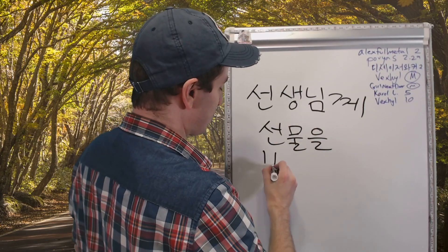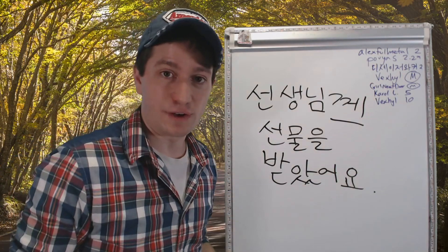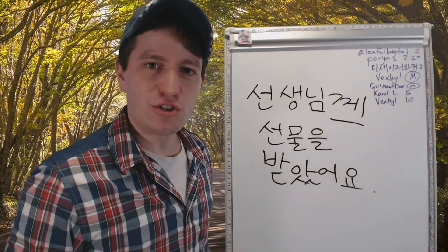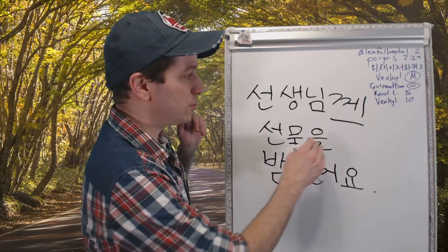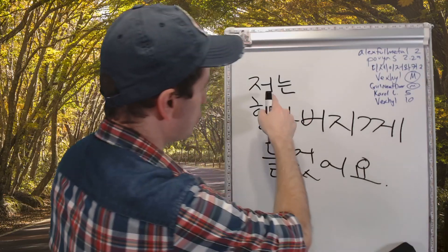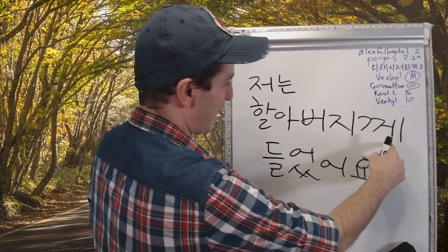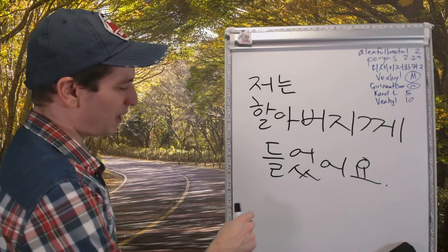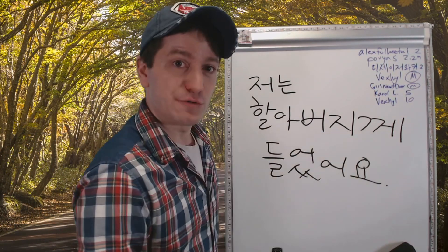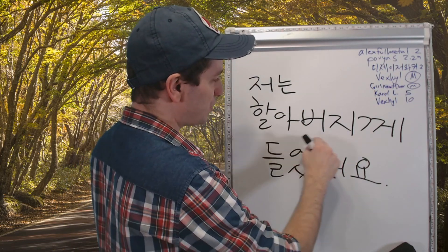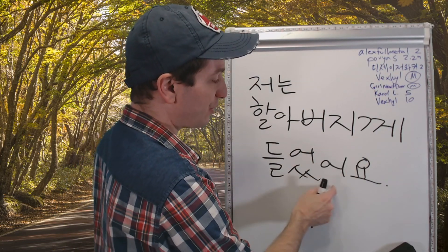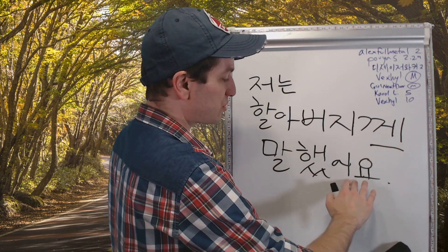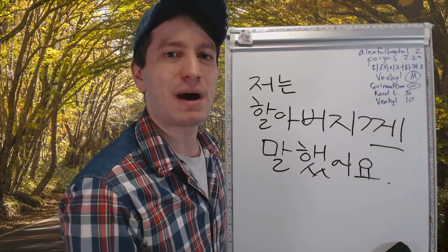선생님께 선물을 받았어요. Before, it was 선물을 드리다, to give a present. Now it's to receive, so that means 께 means from. As long as you know the context of the sentence, you can know easily if this means to or from. 저는 제 할아버지께, to my grandfather or from my grandfather, 들었어요. Heard. I heard it 할아버지께, from my grandfather. 저는 할아버지께 들었어요. I heard it from my grandfather. 저는 할아버지께 말했어요. I said it to my grandfather.